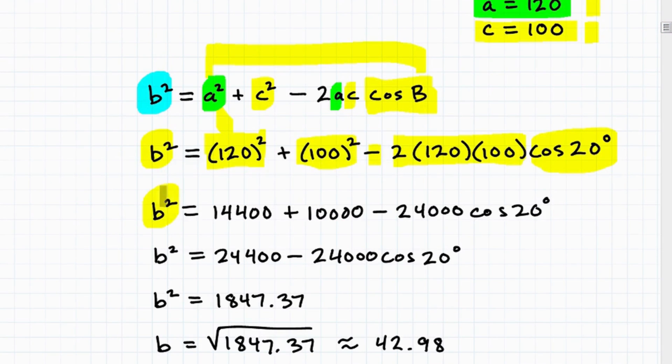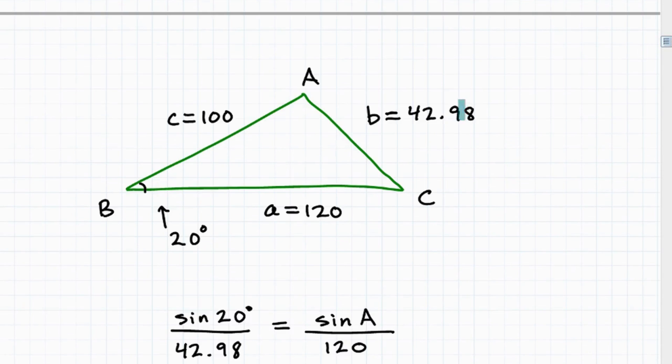Let's simplify. So b squared equals 14400 plus 10000 minus 24000 cosine 20 degrees. When we put all of this into our calculator, it should come out to be around 1847.37. But I don't want b squared, I want b, so I need to take the square root of both sides. I get b equals the square root of 1847.37, which is approximately 42.98. So I got b now, it's 42.98, and I have angle B.